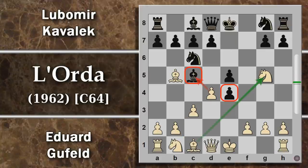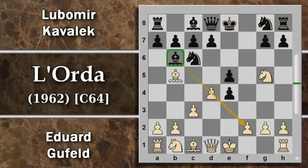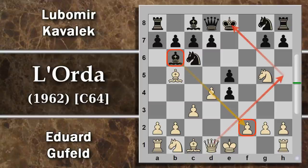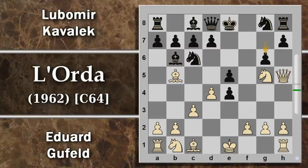In partita Cavalek ritira semplicemente l'alfiere. Questa manovra indica la strategia a lungo termine: quest'alfiere vuole mantenersi su questa diagonale per mantenere pressione su f2, punto nevralgico per la difesa del re bianco. Un possibile problema per il nero sembra essere l'attacco donna h5, ma non è una grossa preoccupazione perché la spinta g6 funziona e rimanda la donna al mittente.